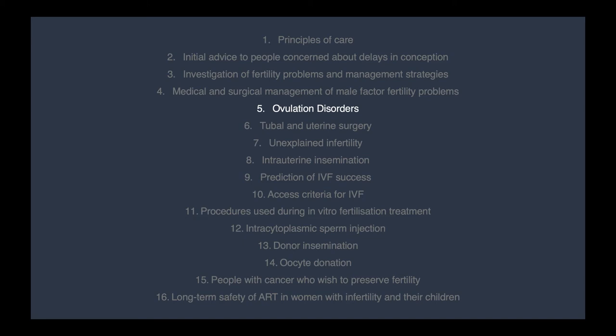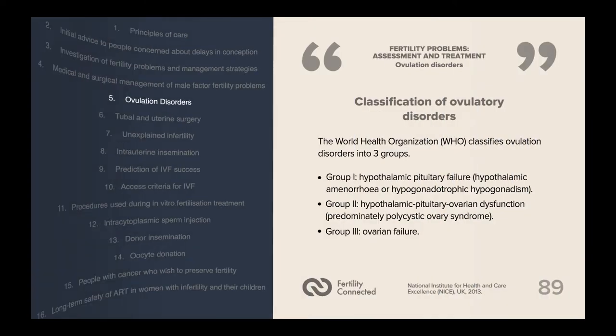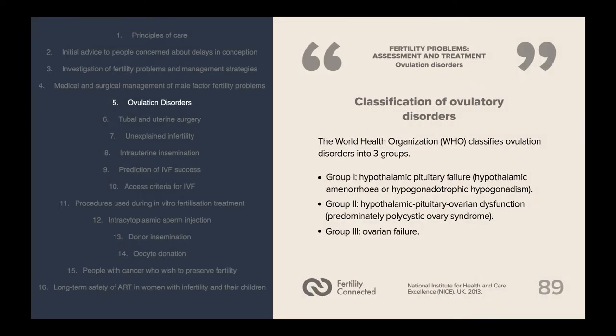Ovulation disorders are classified by the World Health Organization into three main groups. Group one includes hypothalamic pituitary failure, which can be divided into hypothalamic amenorrhoea or hypogonadotrophic hypogonadism. Group two includes hypothalamic pituitary ovarian dysfunction, predominantly polycystic ovarian syndrome. Group three is ovarian failure.